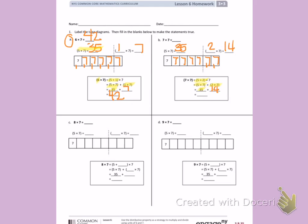I need to add those numbers together. 35 plus 14 gives me a total of 49. 7 times 7 is 49.